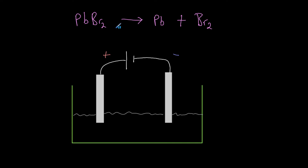The state symbols really tell you what's going on. We carry this out in the molten state — molten means we've melted lead bromide, so it's a liquid, not dissolved in water. Lead is also going to be a liquid at that temperature. However, bromine at very high temperature is going to be a gas, because bromine is a simple molecule and forms a gas at high temperatures, and we need a high temperature to melt lead bromide.